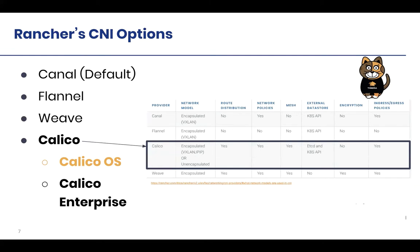This is a good summary from Rancher's docs highlighting some of the key features, network models, and encryption features comparing them across all four options. To summarize: if you're deciding on a CNI, there are a lot of factors to consider. One is the network model you want to use.